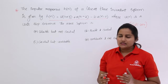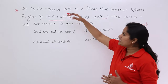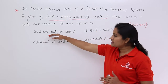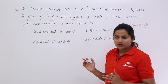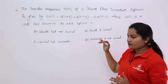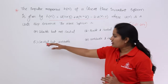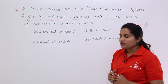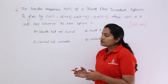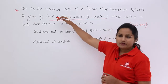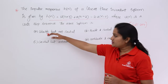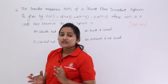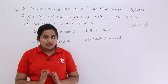For a system with this impulse response, the options are: stable but not causal, stable and causal, causal but not stable, or unstable and not causal. We need to determine which applies, meaning we need to check both stability and causality.